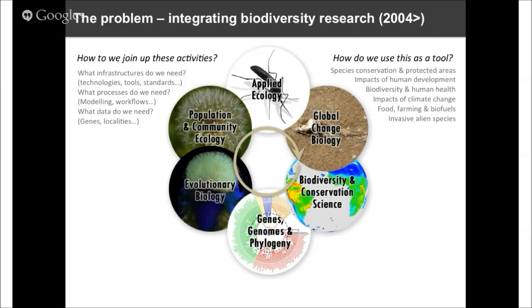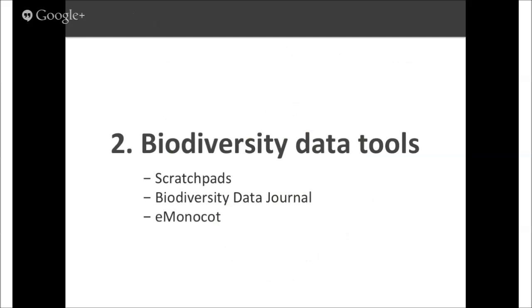The ultimate ambition is to use this as a tool to address big questions about biodiversity science relevant to science and society — issues like species conservation, the impact of human development on biodiversity, human health, climate change, and effects of alien species. All these are critically dependent upon research across many different areas, and it's only by bringing this work together that we can really start to address them. My research took some early steps toward this problem through the development of a variety of software tools. I want to briefly highlight three examples that are helping to bring about the kind of integration we need across the biodiversity science community.